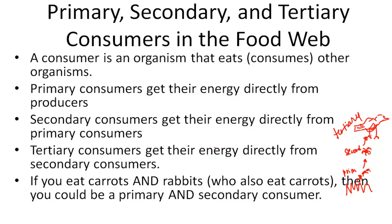If you eat carrots and rabbits who also eat carrots, you could be a primary and a secondary consumer. So maybe there's a frog — a frog that eats both ants and spiders. That makes it a primary and a secondary consumer.